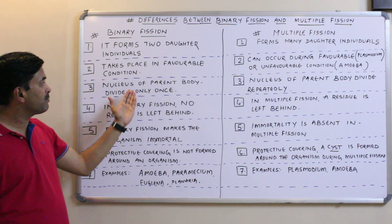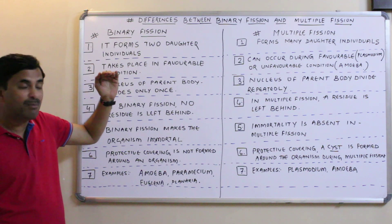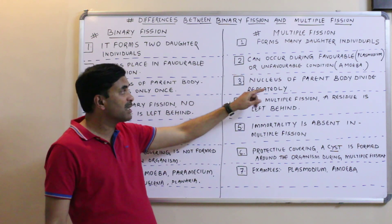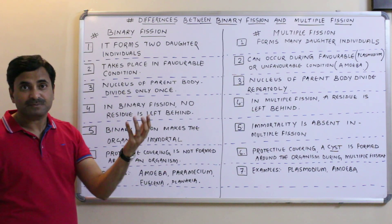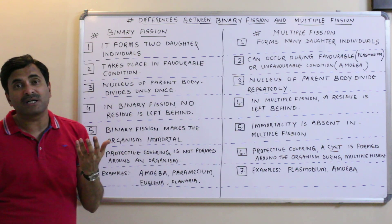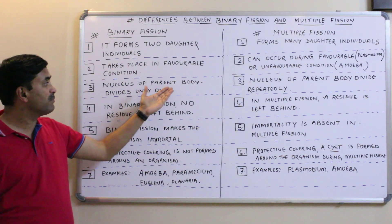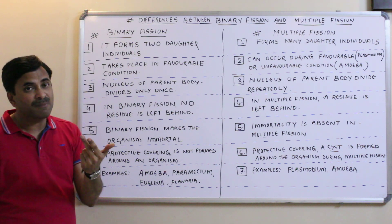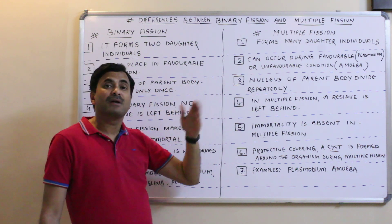The third point: in binary fission, the nucleus of the parent body divides only once. In multiple fission, the nucleus of the parent body divides repeatedly — many times — and later, after division of the cytoplasm, it forms many daughter individuals. In binary fission, the nucleus divides once, forming two nuclei, and after cytoplasm division, two daughter individuals are formed.